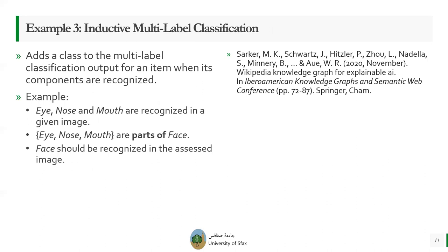Another example of a semantic-based method for evaluation and adjustment of supervised classification algorithms is inductive multi-label classification. This method adds a class to the multi-label classification output for an item when its components are recognized. For example, if eye, nose, and mouth are recognized in a given image, and we know that eye, nose, and mouth are parts of a face, then face should be recognized in the assessed image.